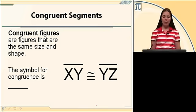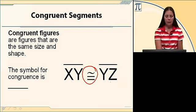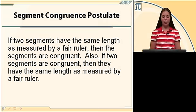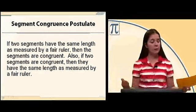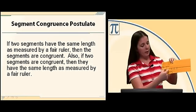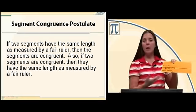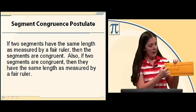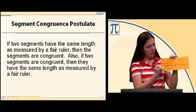Congruent figures are figures that are the same size and shape. Our symbol for congruence shows that segment XY is congruent to segment YZ. To write the congruent symbol, make an equal sign and then put a squiggle on top. If two segments have the same length as measured by a fair ruler, then the segments are congruent. A fair ruler just means that there's equal spacing between each of the numbers. An unfair ruler would have unequal spacing between its numbers and would not be considered fair.